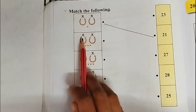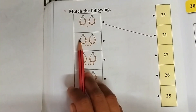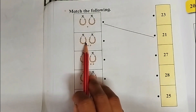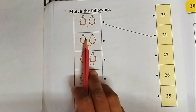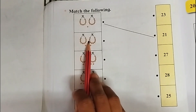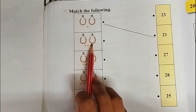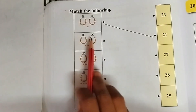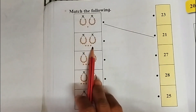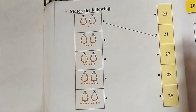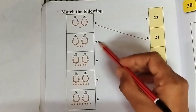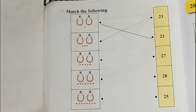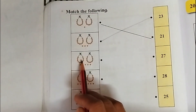Let's move on to the next one. Count from 1 to 23: 1, 2, 3, 4, 5, 6, 7, 8, 9, 10, 11, 12, 13, 14, 15, 16, 17, 18, 19, 20, 21, 22, 23. So where is 23? We will match it over here.